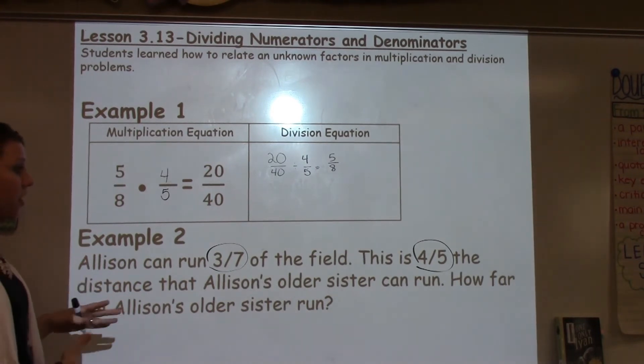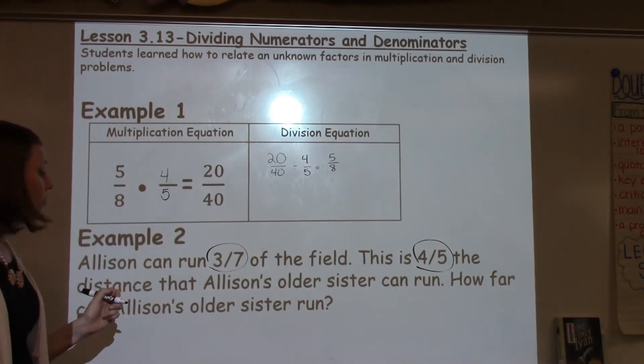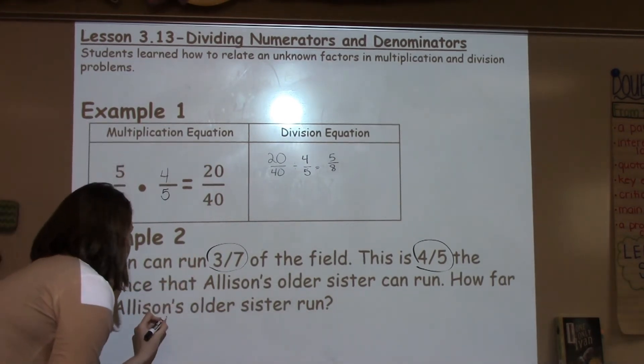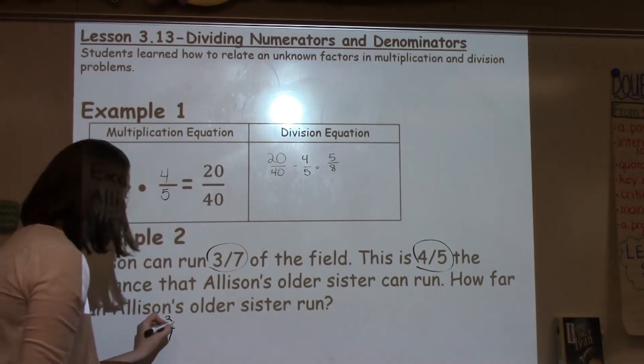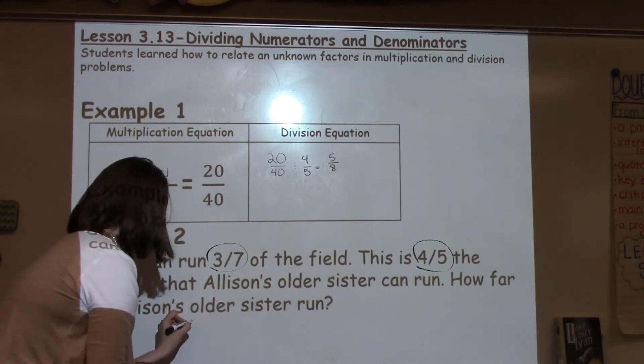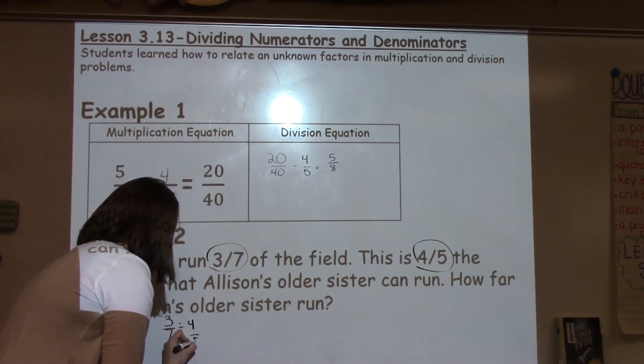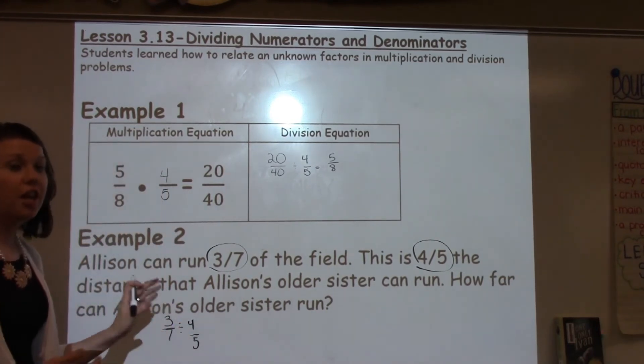When I think about this equation, I need to figure out what can Allison's older sister run. So, I'm going to take my 3/7. I know I'm going to divide by my 4/5. Students have learned keep, change, flip.